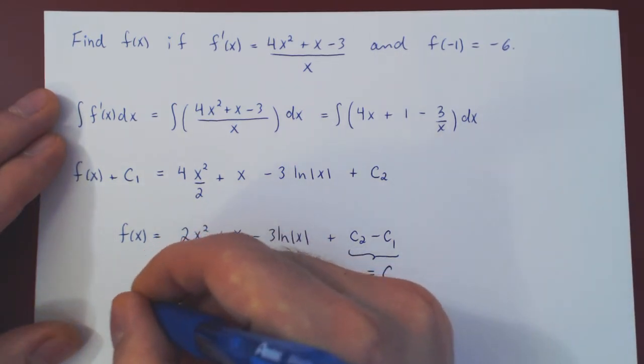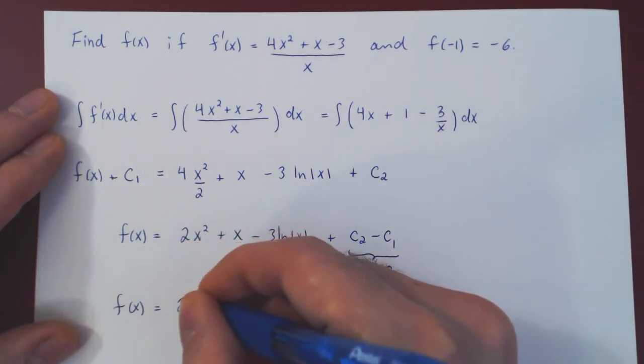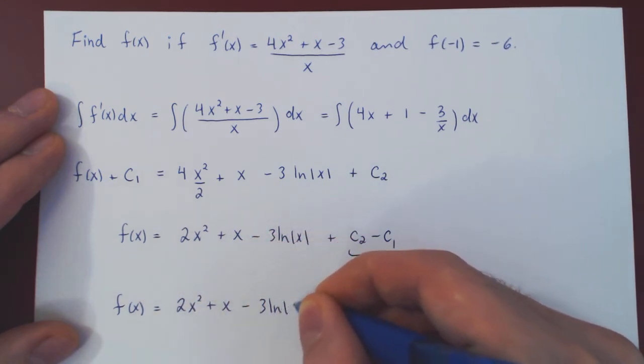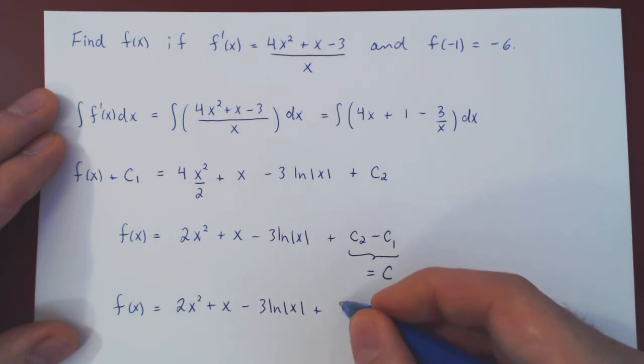And now we're essentially done. We have the function being 2x² plus x minus 3 ln|x| plus an arbitrary constant.